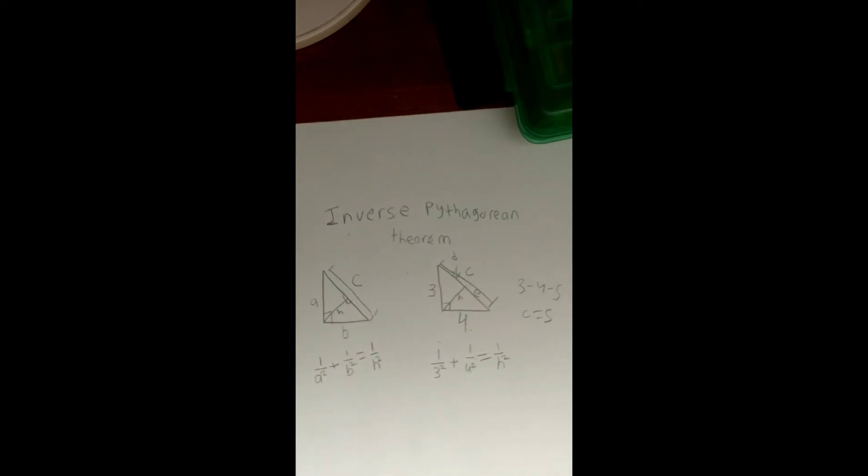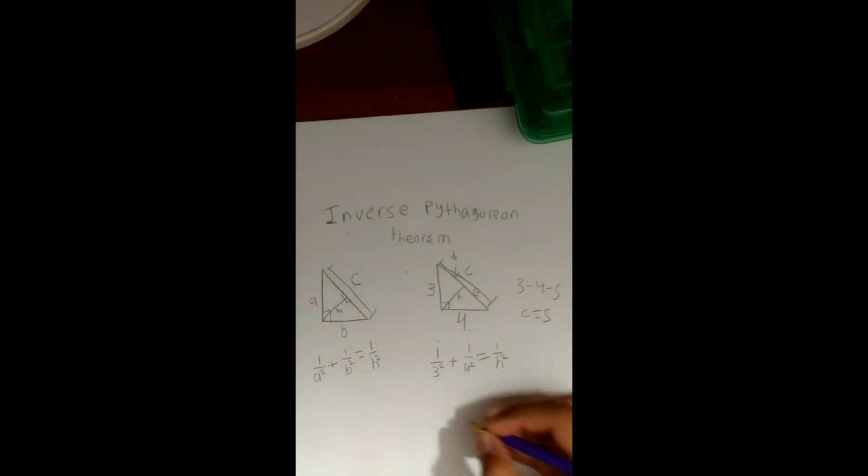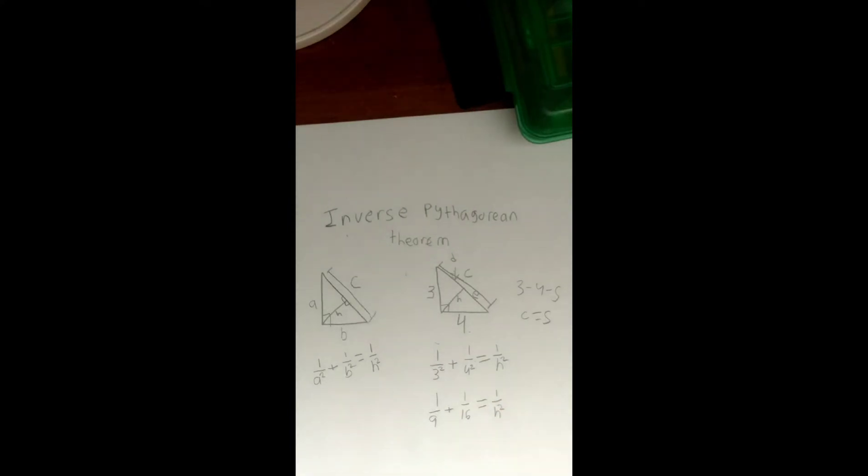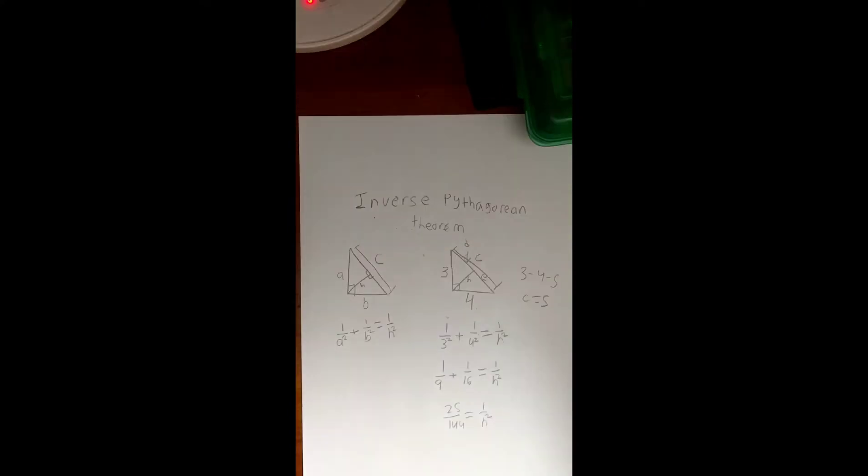And then you continue to solve this. You get 1 over 9 plus 1 over 16 equals 1 over h squared. By simply adding those fractions up, 1 over 9 plus 1 over 16, you get 25 over 144.